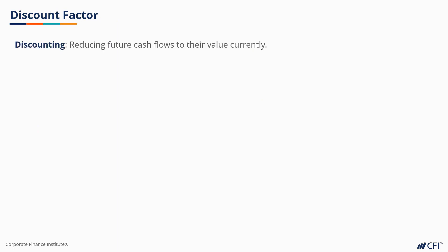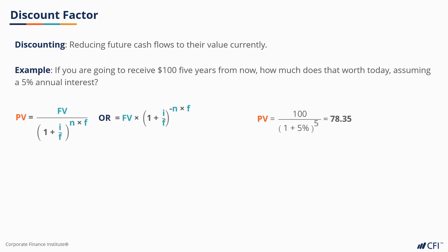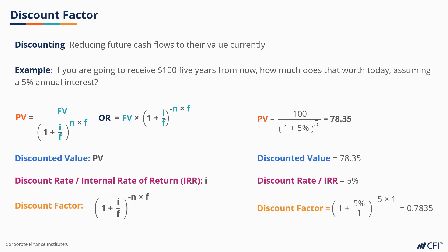What we did just above is known as discounting, in other words, reducing future cash flows to their value currently. Using the same example that we did above, the present value PV of $78.35 is also known as the discounted value. The 5% interest can be referred to as the discount rate or the internal rate of return, IRR. And finally, the term (1 + i/F)^(-N×F), or 0.7835, is known as the discount factor. This concept will be very important when we look at how we price a bond.